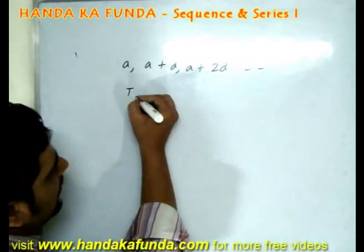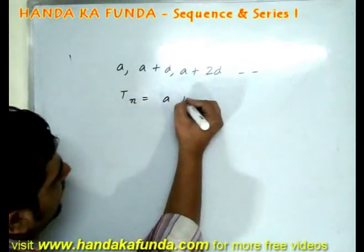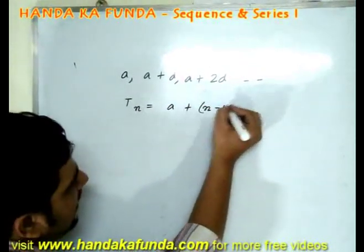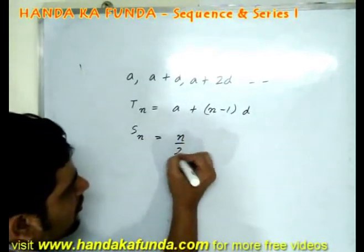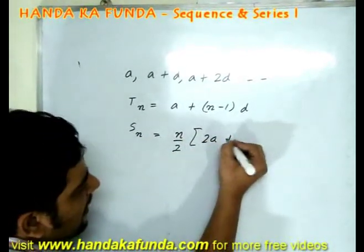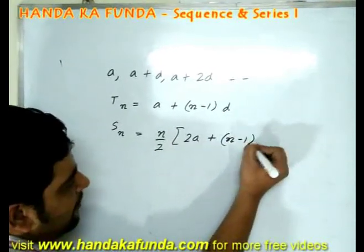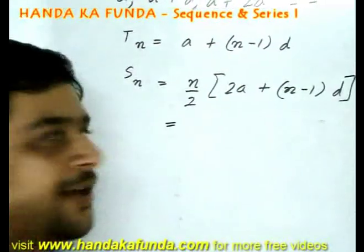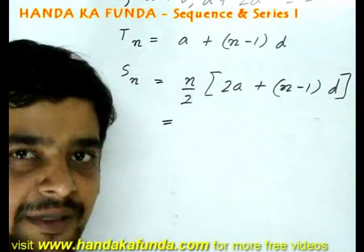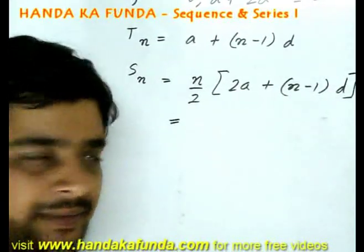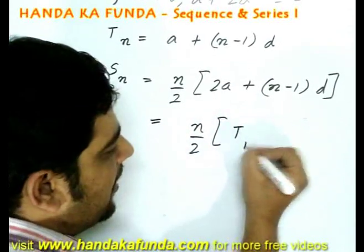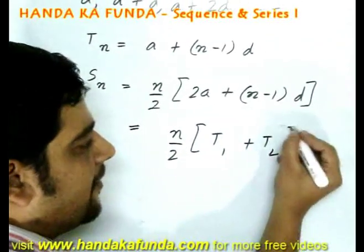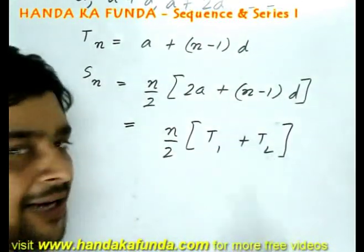The nth term of a series is given by a plus n minus 1 into d. Sum till n terms is given by n by 2 into 2a plus n minus 1 into d. If you are given the first term and the last term, then also you can find out the sum. It will be n by 2 into t1 plus tl, where t1 is the first term and tl is the last term.